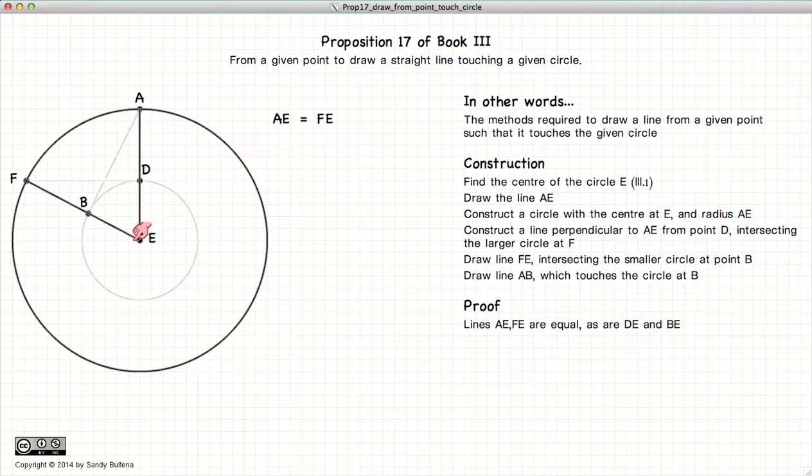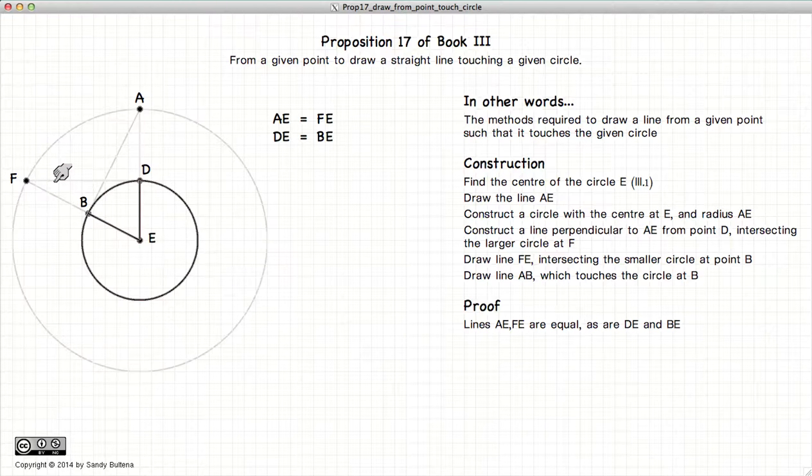AE and EF are equal because they are the radii of the same circle. BE and DE are equal since they are the radii of the same circle.